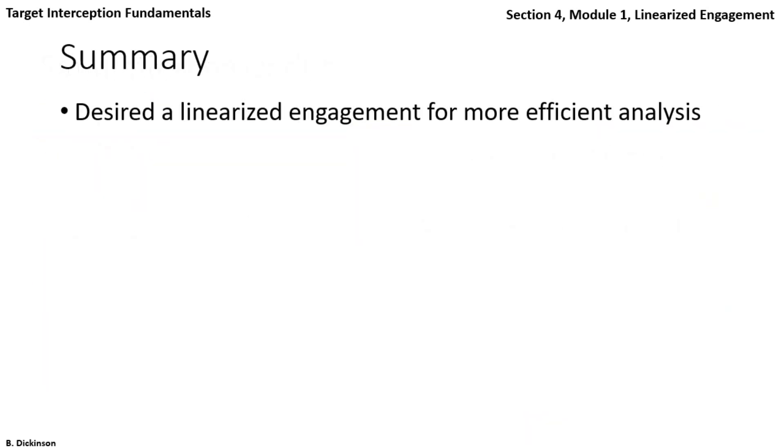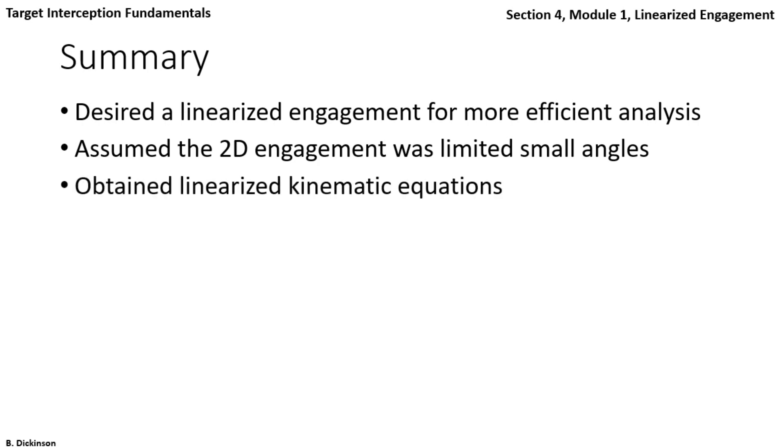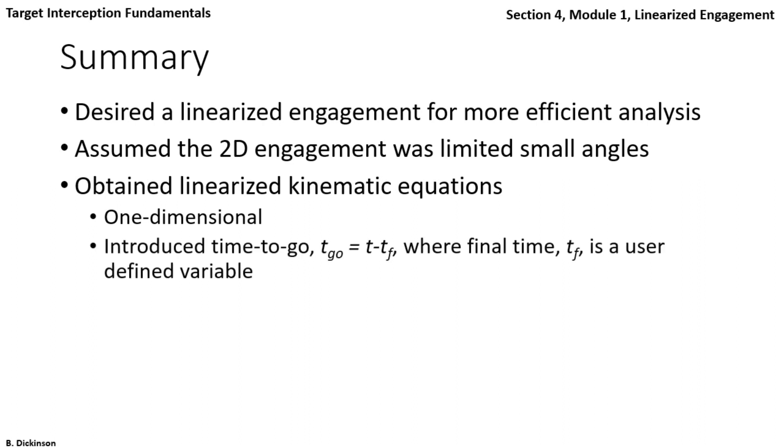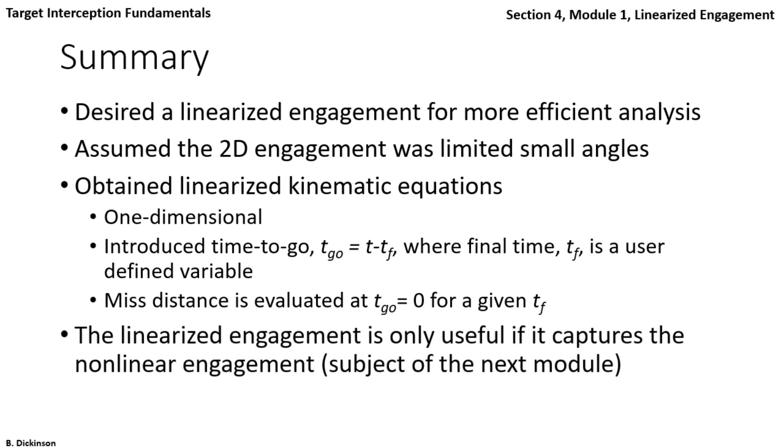So, in summary, we wanted a linearized engagement for more efficient analysis and to forward our understanding of proportional navigation. We assumed the 2D engagement was limited to small angles, and that allowed us to obtain linearized kinematic equations. The outcome of linearization is the kinematics are one-dimensional, expressed in terms of relative position and relative velocity. We introduced a variable called time to go, where final time, TF, is a user-defined variable. And the miss distance here is evaluated at time to go zero, just from the vertical separation between pursuer and target.